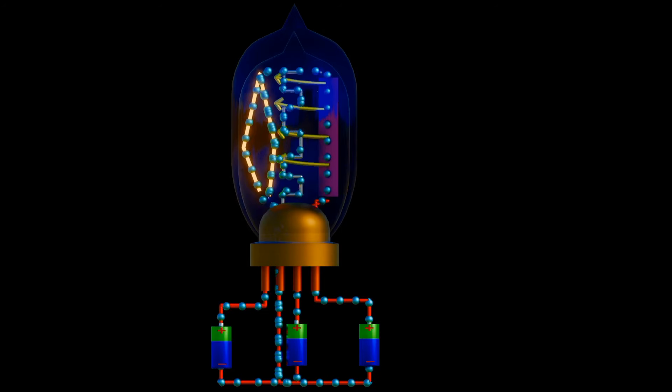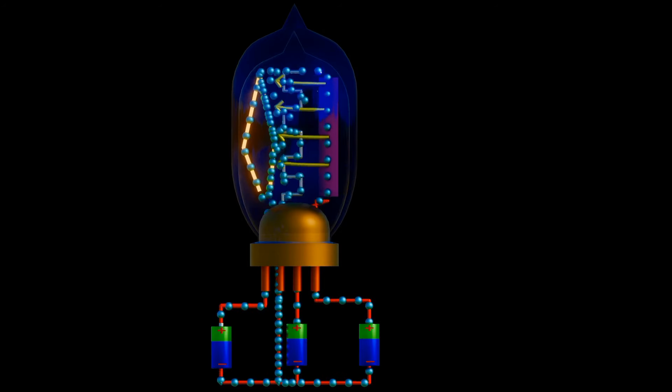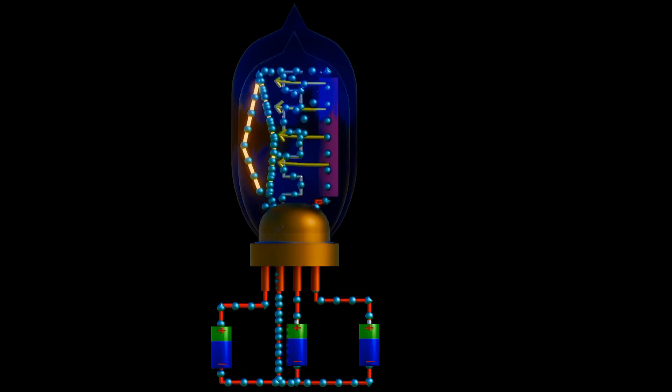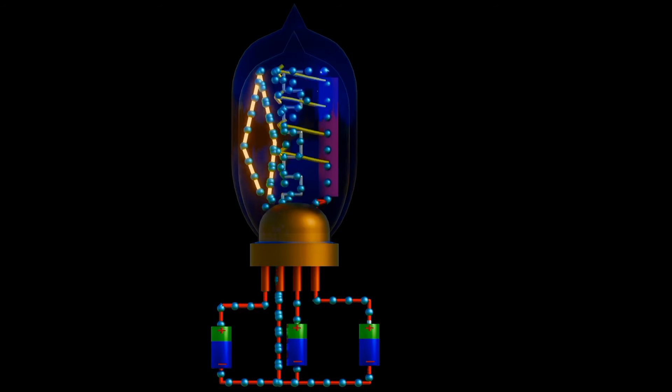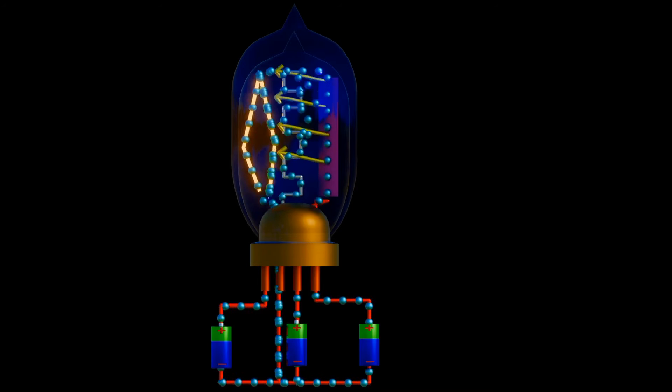When analyzing circuits, we take as a convection that positive current flows from higher potential to lower potential. This means that convectional current flows in the opposite direction to the electrons, meaning that the convectional current in a tube flows from plate to cathode. With this we can form a NOT gate, AND gate, OR gate.